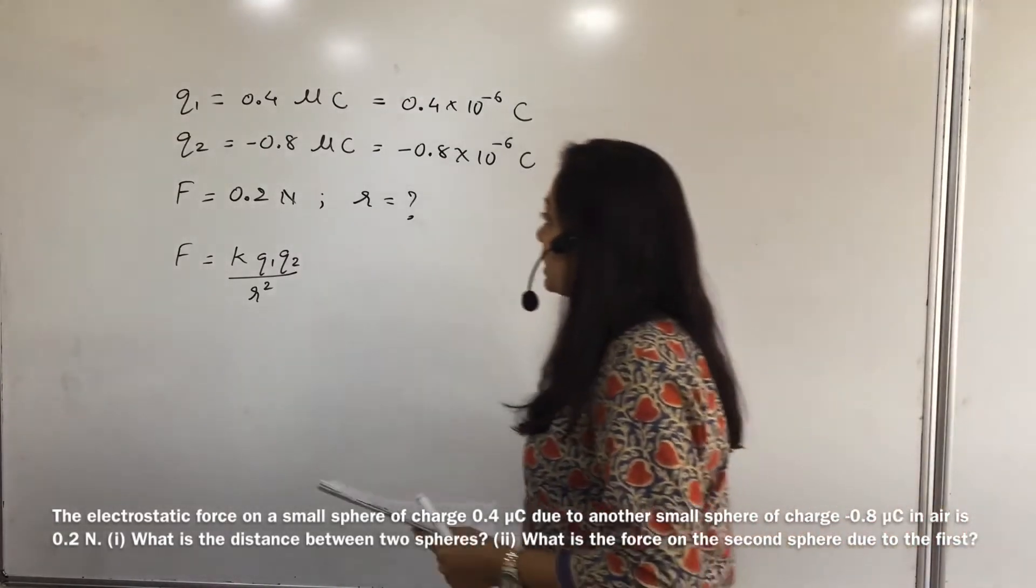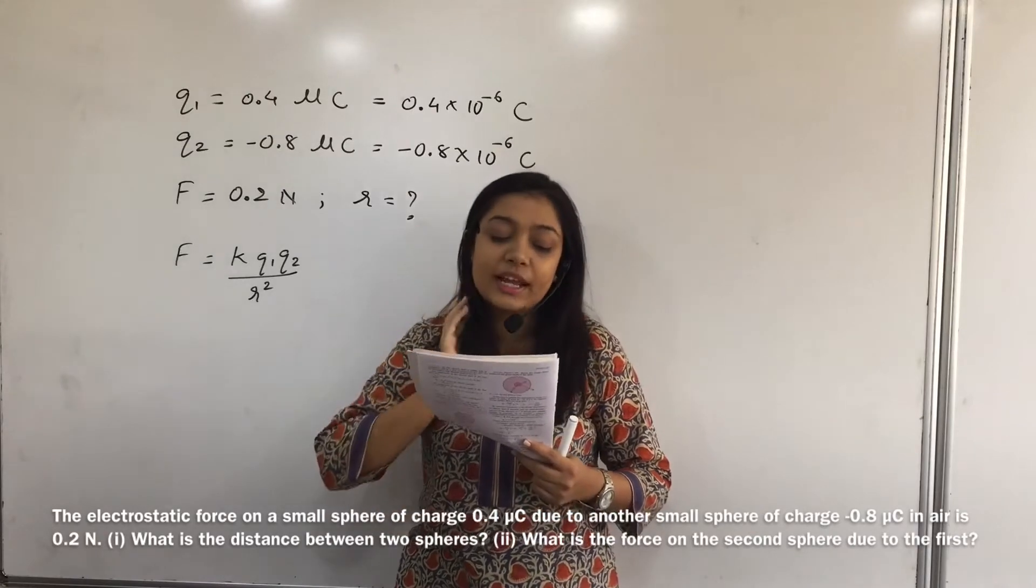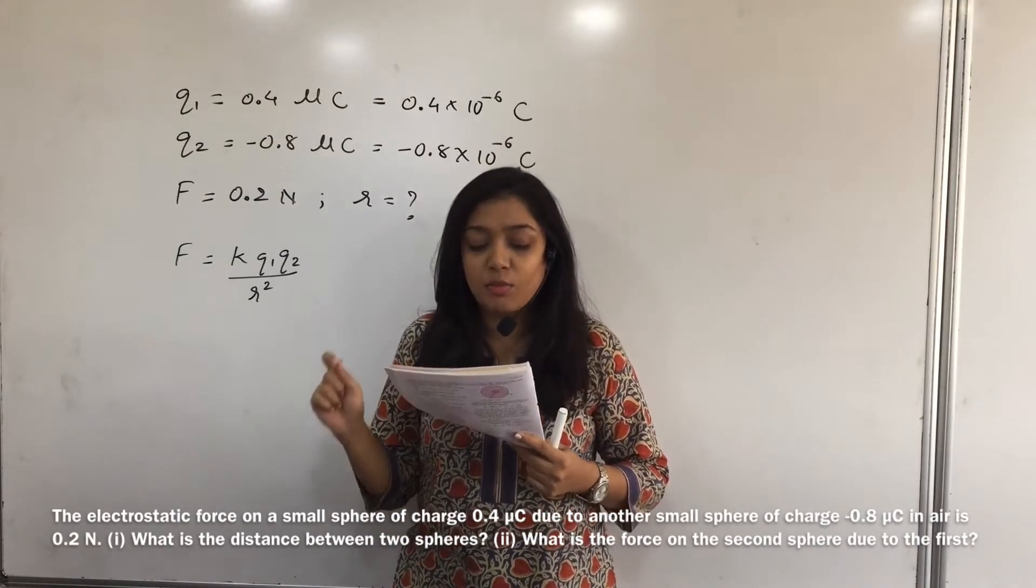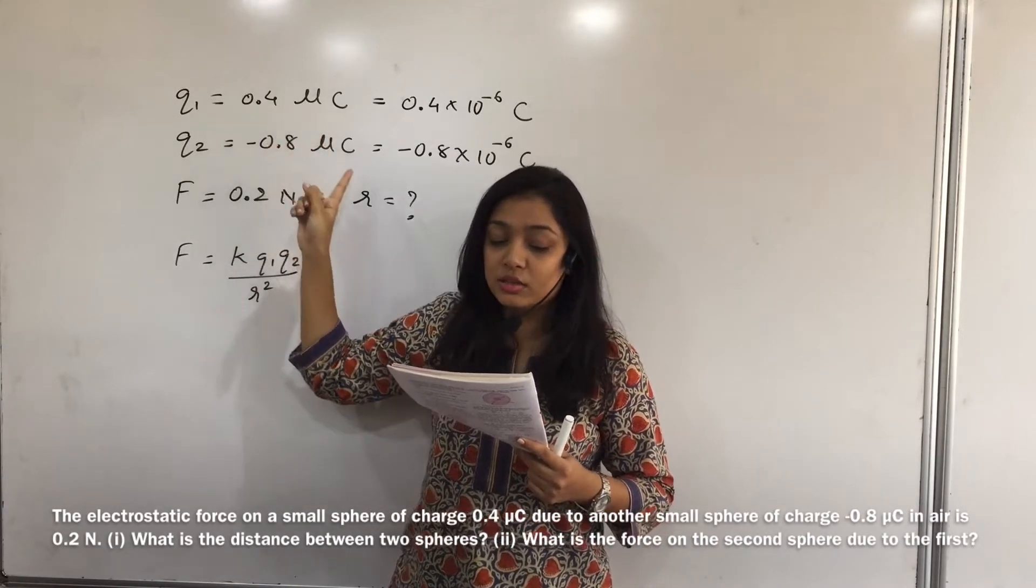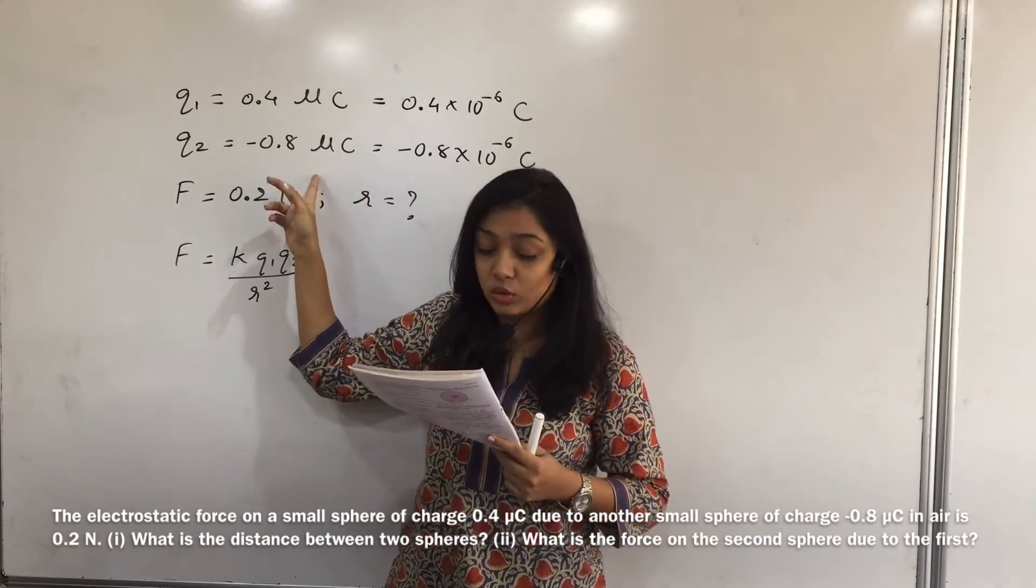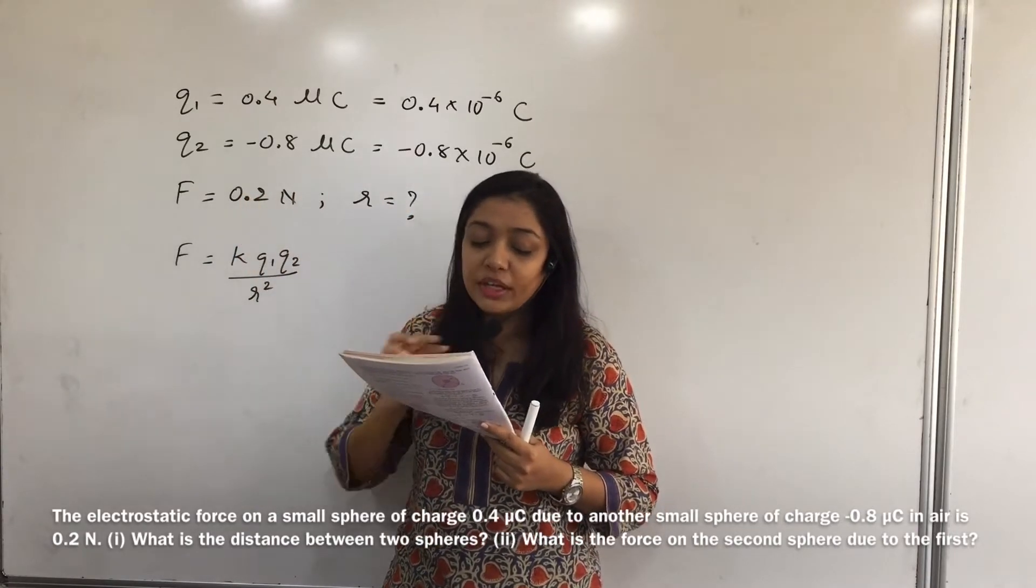Okay, so now we are going to start with the second question. Question number two. The electrostatic force is given on a small sphere of charge 0.4 microcoulomb to another small sphere of charge minus 0.8 microcoulomb in air is 0.2 Newton.